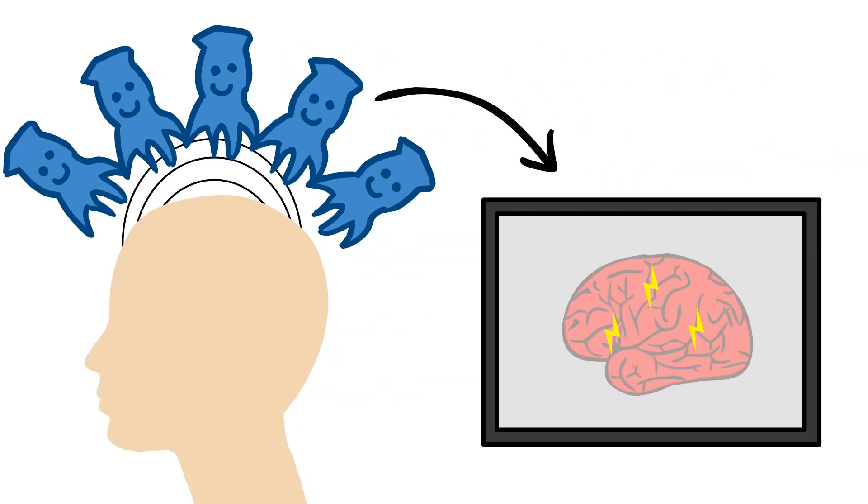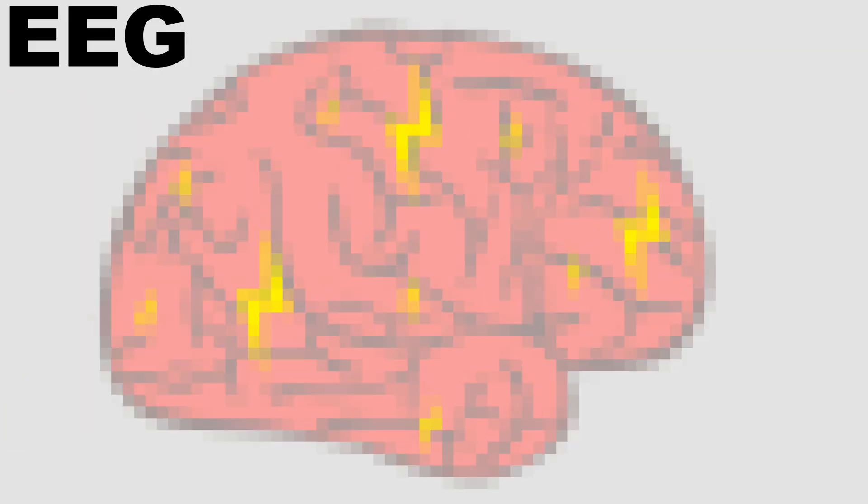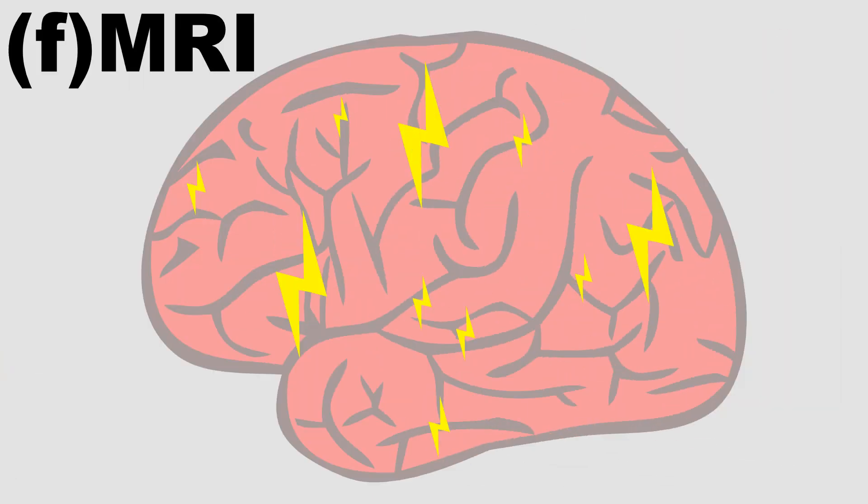It also has really good spatial and temporal resolution, meaning it captures a lot of detail, and can do so thousands of times per second, so we can see changes in brain activity moment by moment. Techniques like EEG have less detail, and MRI can only take an image every second or two.